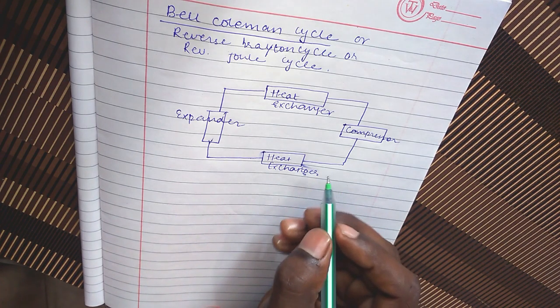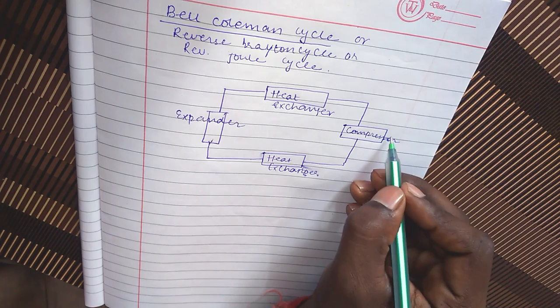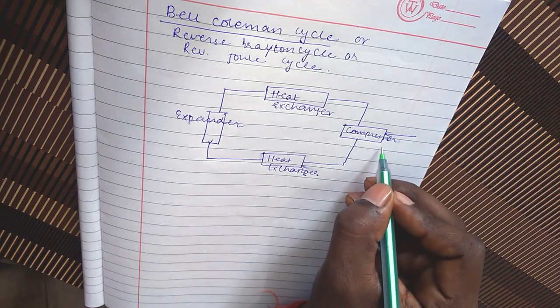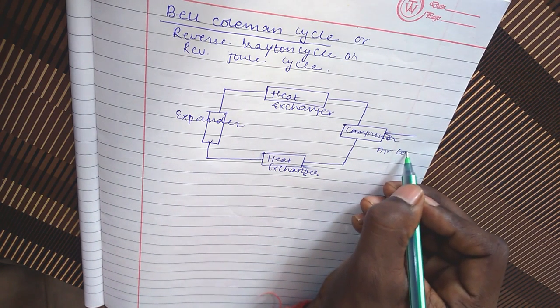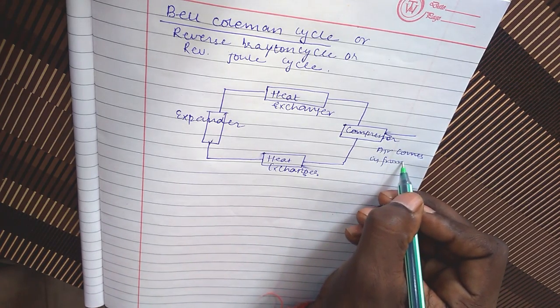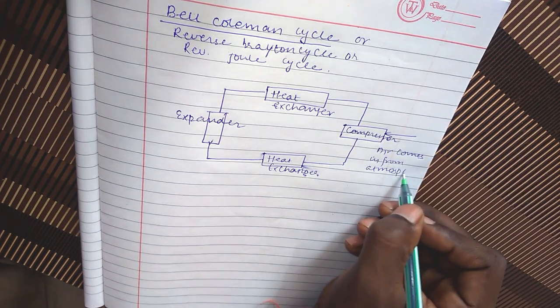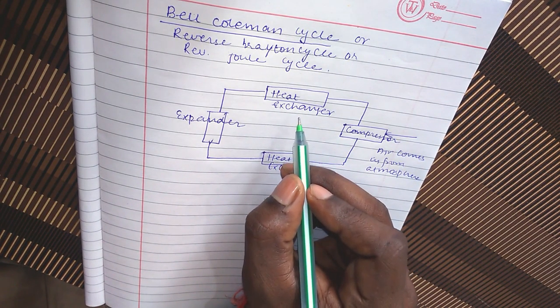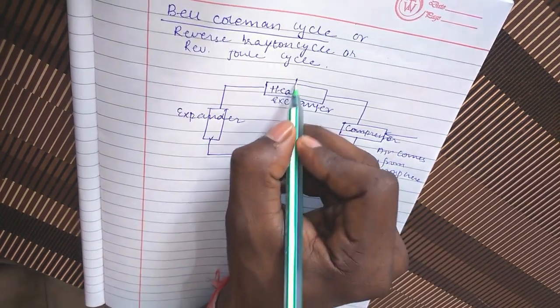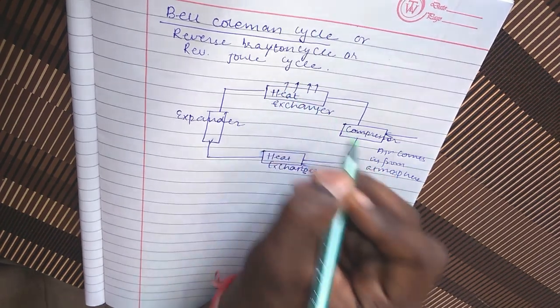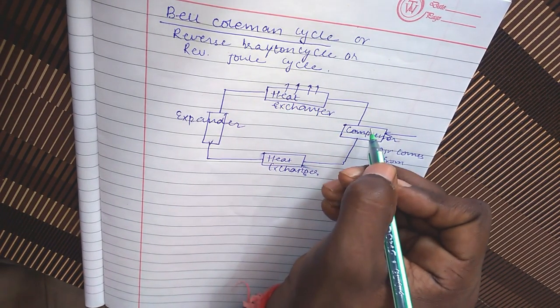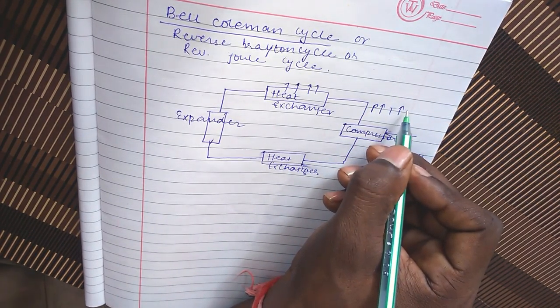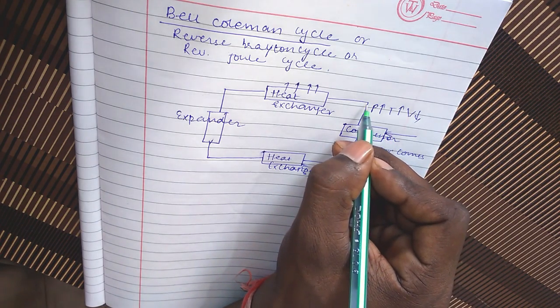Now let's discuss: here in compressor, air comes inside from the atmosphere. This is a heat exchanger where the refrigerant is cooled because it rejects heat to the atmosphere. As the air compresses in the compressor, then the temperature and pressure both rise and volume decreases.